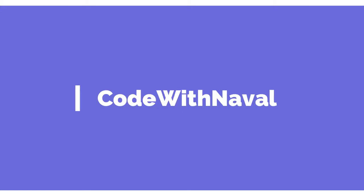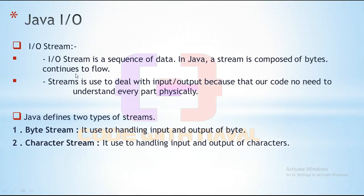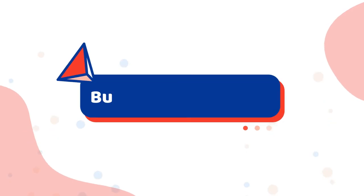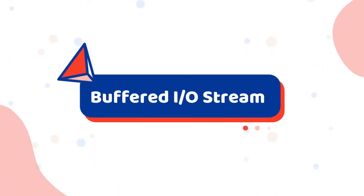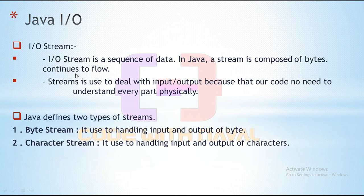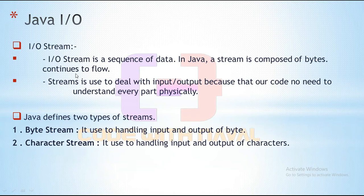Hello friend, I am Nawal, you are watching Code with Nawal. Welcome to Java series part 51. In the last video we saw a basic introduction of input/output classes. In this video we are going to discuss types of stream classes. There are two types: byte stream and character stream. We can use these two stream classes to perform any input/output operation.